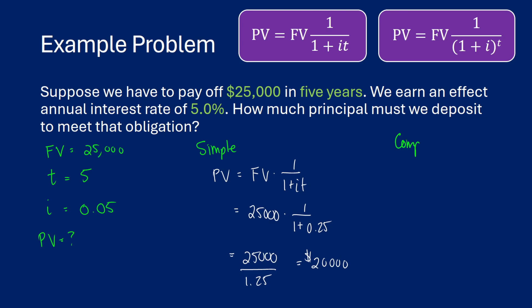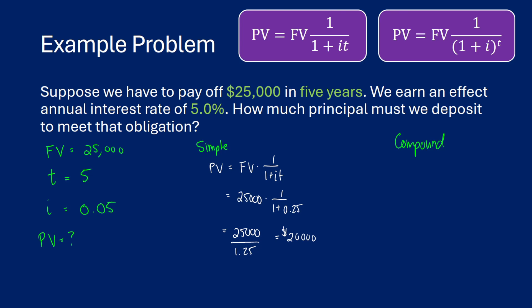For compound interest, the math gets a little more involved because we have to deal with roots. Our present value equals $25,000 times the discount factor, which is one over one plus 0.05, raised to the 5. So that's 25,000 divided by 1.05 to the power of 5, giving us $19,588.15. Using compound interest, we invest about $412 less than with simple interest to reach the same amount after five years.